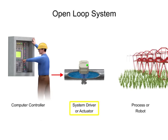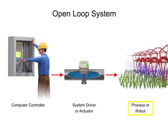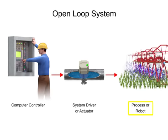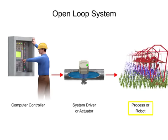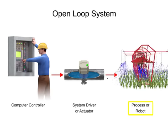When the valve turns on, water flows to the sprinkler and drives a motor that allows the sprinkler to simultaneously move along the field and water the crop.